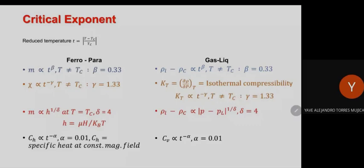So we know what the reduced temperature and reduced field are, and we know the critical exponents beta, gamma, delta, and alpha. These exponents satisfy a number of inequalities. One is the Rushbrooke inequality: alpha + 2*beta + gamma >= 2. Another is alpha + beta*(1 + delta) >= 2, which comes from the convexity property of the free energy — derivable using field theory. These inequalities are also universal.